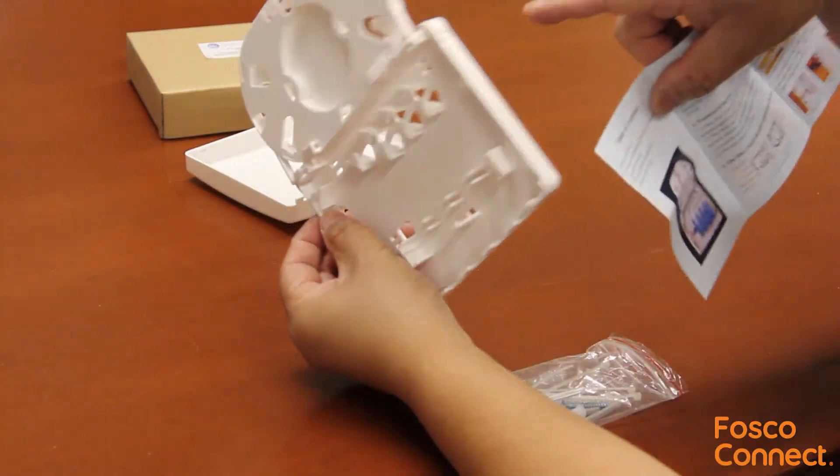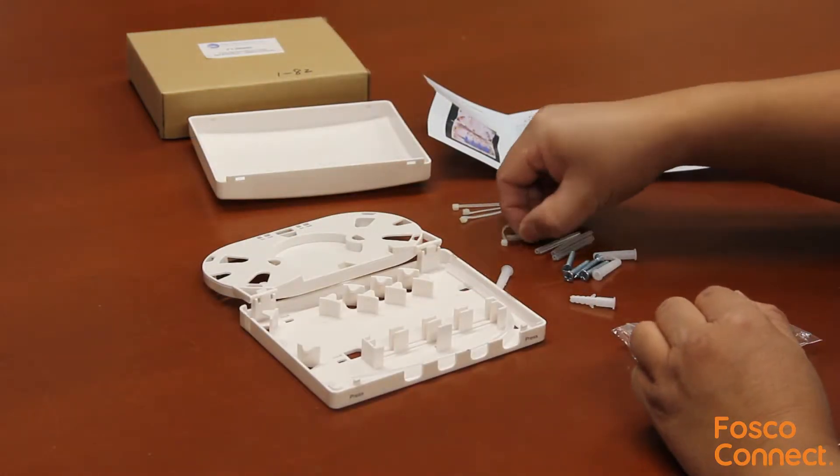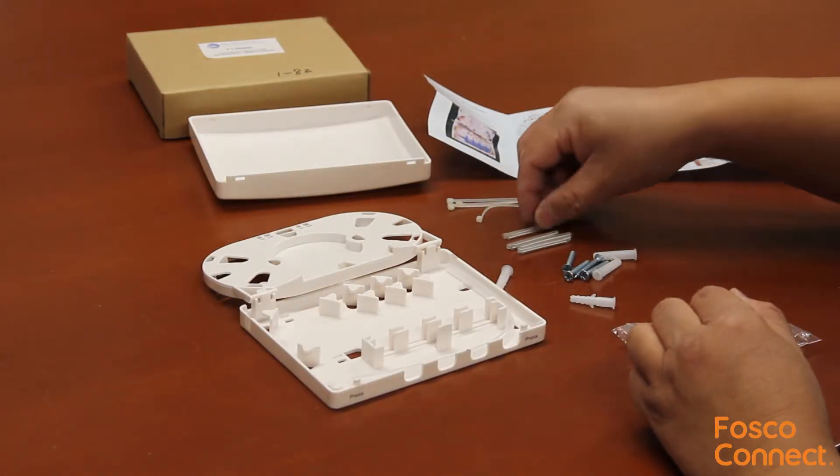You can knock out these openings, and then you have your cable come in from this tube. 4 tie wraps, 4 fusion splice sleeves, 4 mounting anchors and screws.